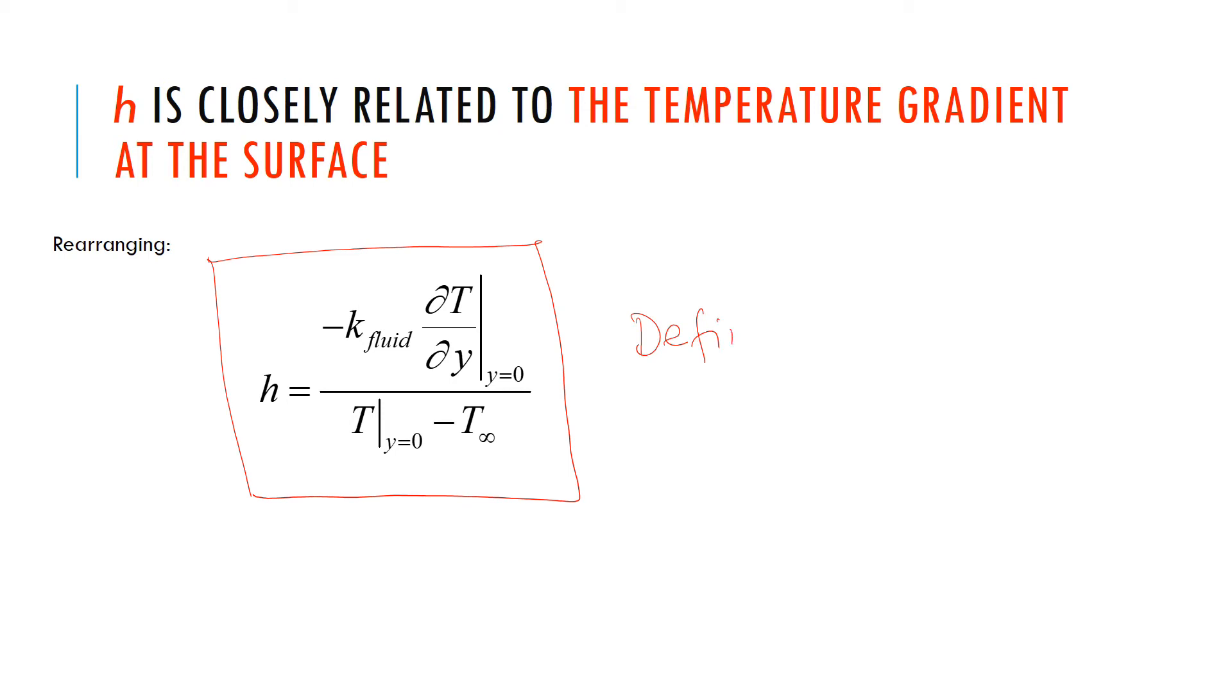Meaning h must be defined this way so that I get the same heat flux as the reality. So, rearranging the equation from the last slide, we get this. That is my defining equation for h.